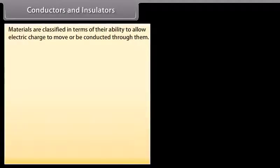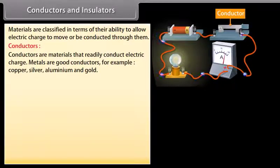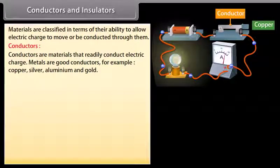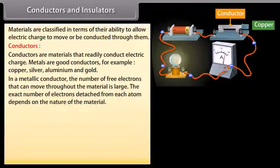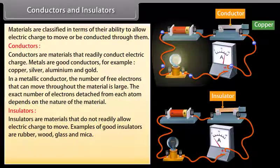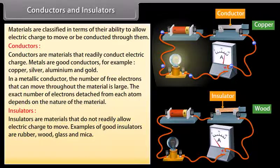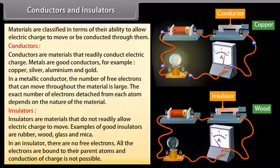Conductors and insulators: Materials are classified in terms of their ability to allow electric charge to move through them. Conductors readily conduct electric charge; metals such as copper, silver, aluminum, and gold are good conductors. In a metallic conductor the number of free electrons is large. Insulators do not readily allow electric charge to move; examples include rubber, wood, glass, and mica. In an insulator, all electrons are bound to their parent atoms and conduction of charge is not possible.